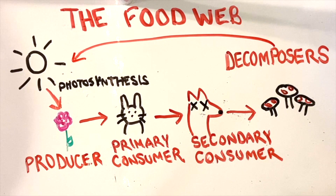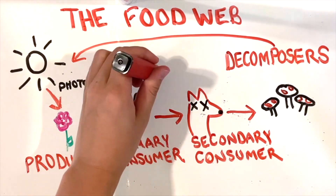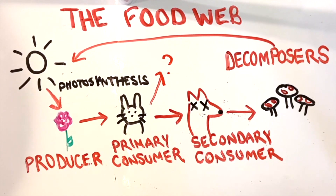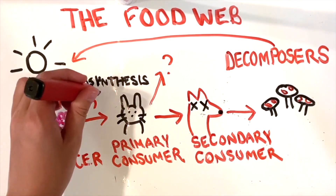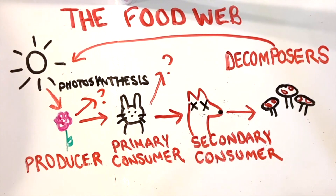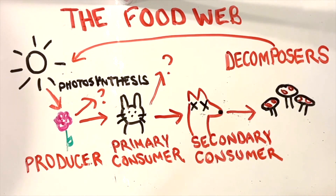Once the energy or nutrients have been brought back into the soil, they provide energy for new plants to grow. The reason it's called a food web instead of a food chain is because different animals could have come to eat the flower or the rabbit, creating a giant web of possibilities. So to review: a food web consists of all the food chains in a single ecosystem. Each living thing in an ecosystem is part of multiple food chains, and each food chain is one possible path that energy and nutrients may take as they move through the ecosystem.